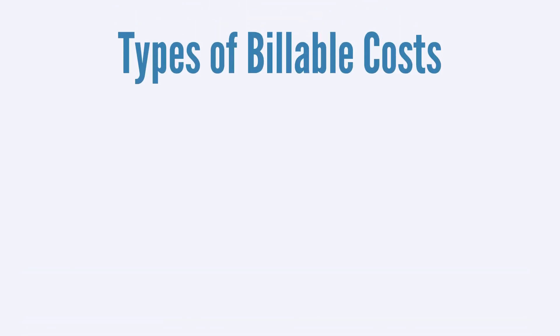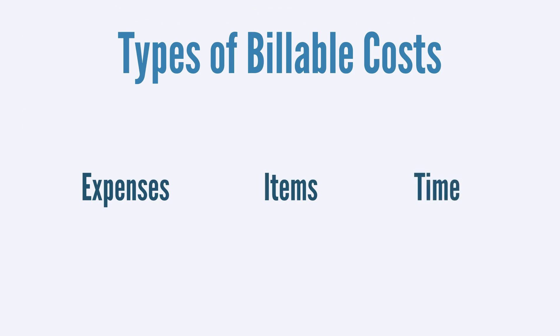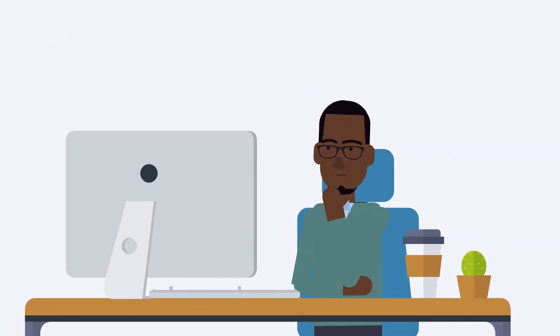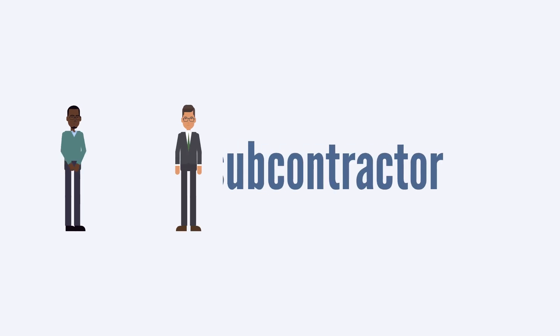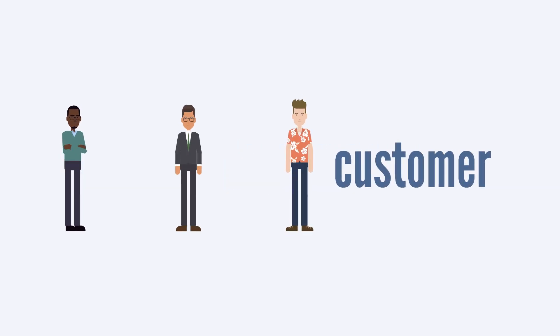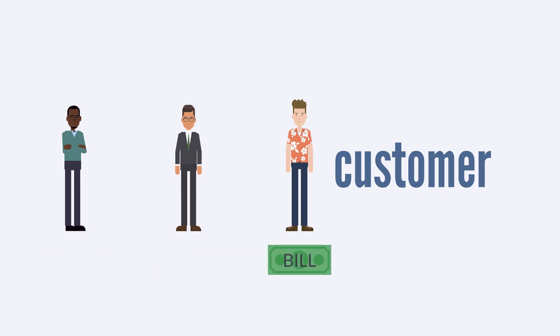Now let's look at the three types of billable costs: expenses, items, and time. We'll start with billable expenses and billable items, as these two features share many similarities. For example, suppose you used a subcontractor to complete a job for one of your customers — you could pass on the cost of that subcontractor directly to your customer by billing them for that expense.